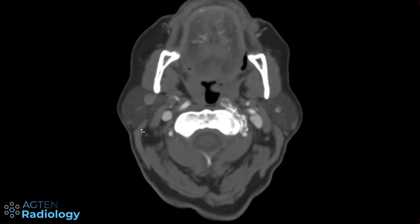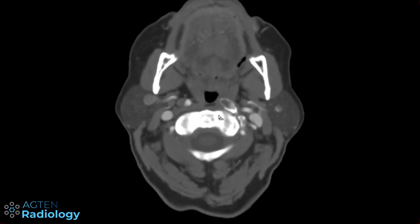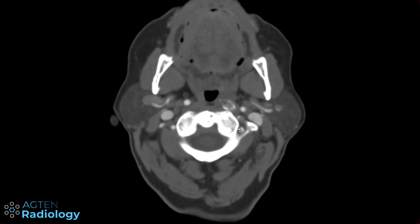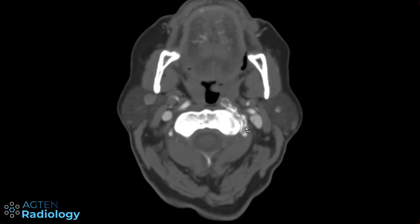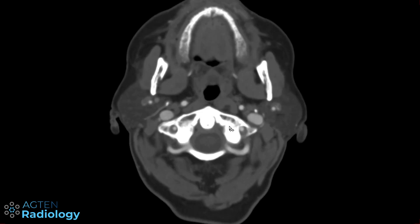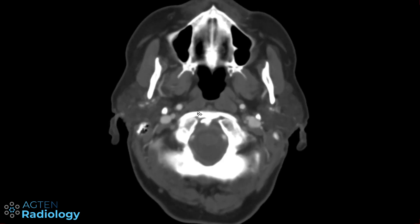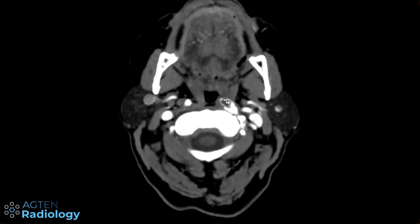One important thing to remember: not every calcification at the level of the longus coli muscle is hydroxyapatite deposition disease. Here we have calcifications — or rather ossifications — just anterior to C2, within or close to the longus coli muscle. However, because of the rim of sclerosis and the ossified pattern, this is more likely degenerative disease, not an amorphous calcification as seen in calcific tendinitis. This is more likely from osteoarthrosis of C1-C2. There is no inflammation, and the normal fat planes between the longus coli muscles are preserved — it's just an ossicle.